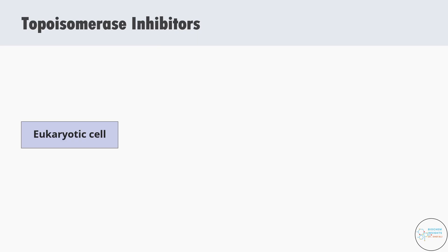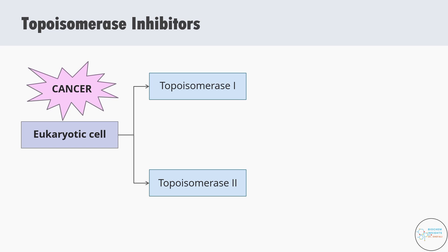Eukaryotic cells have both Type 1 and Type 2 DNA topoisomerases. There are certain drugs that target topoisomerases called topoisomerase inhibitors. We need these inhibitors when eukaryotic cells become cancerous, because cancer cells keep replicating and dividing without stopping. By targeting topoisomerase in cancer cells, we can stop them from replicating.